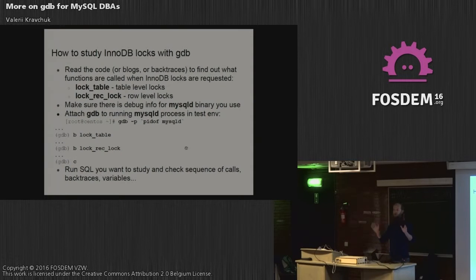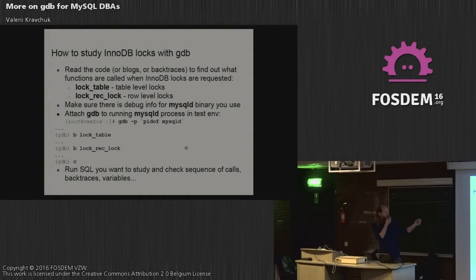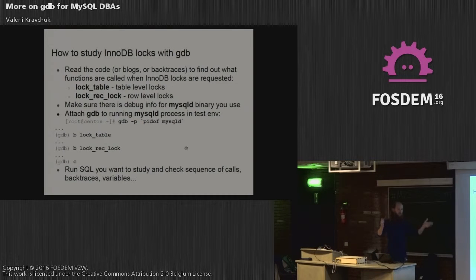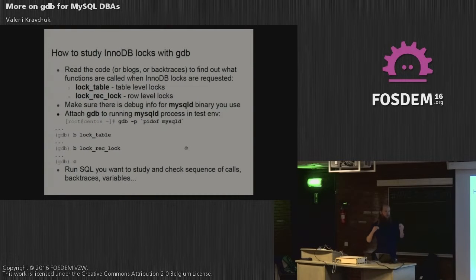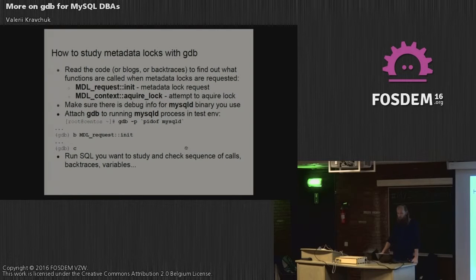I recently started using GDB not just in production but for working on complicated locking-related problems. If you need to find out how locking happens in mysqld, specifically InnoDB locks, you need to identify the functions called when locks are set. For InnoDB specifically, it's lock_table and lock_rec - quite simple names, easy to guess. You set breakpoints, let GDB continue, run your SQL, and you will get breakpoints hit in GDB. You can see in what sequence and order which locks are requested, and sometimes even see lock names or modes resolved to symbolic information.